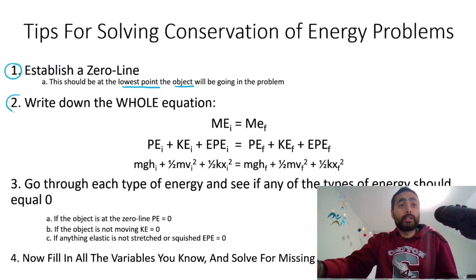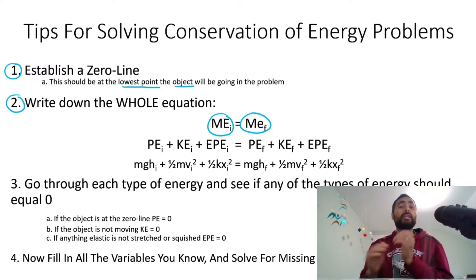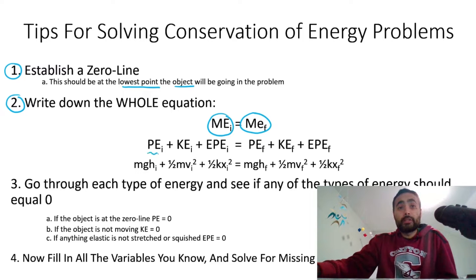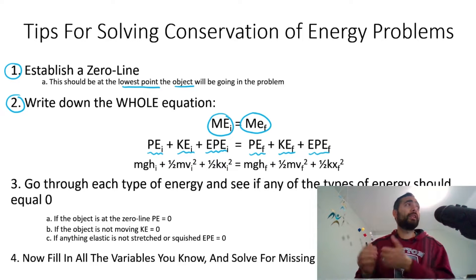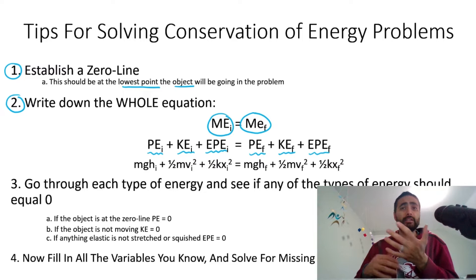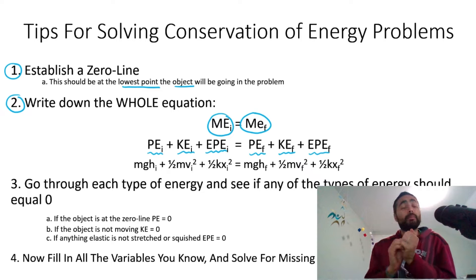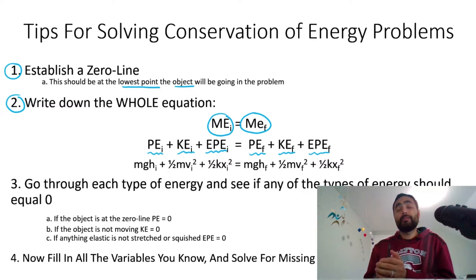Step number two is write the whole equation. This is about conservation of energy, so all of the mechanical energy at the beginning is going to be equal to all of the mechanical energy at the end. I highly suggest writing down potential energy at the beginning, kinetic energy at the beginning, plus elastic potential at the beginning, equals potential energy final, plus kinetic energy final, plus elastic potential energy final — write it all down. Even if you think there's no springs, write everything down, because I've seen this so many times people make silly mistakes without doing this.